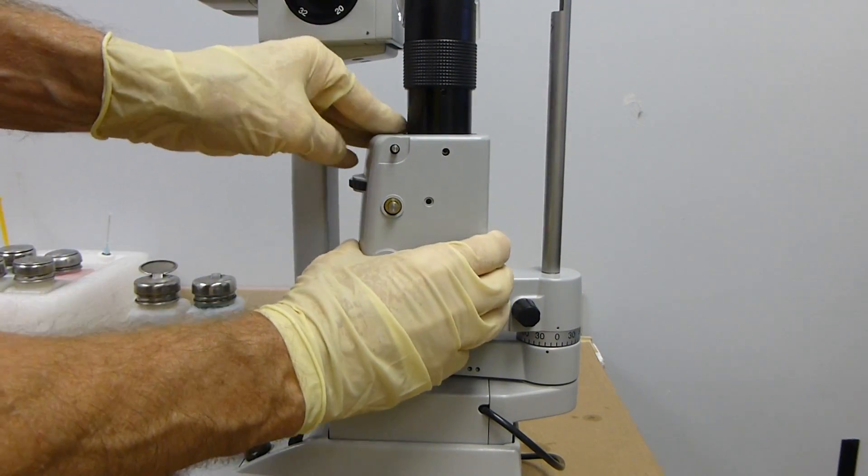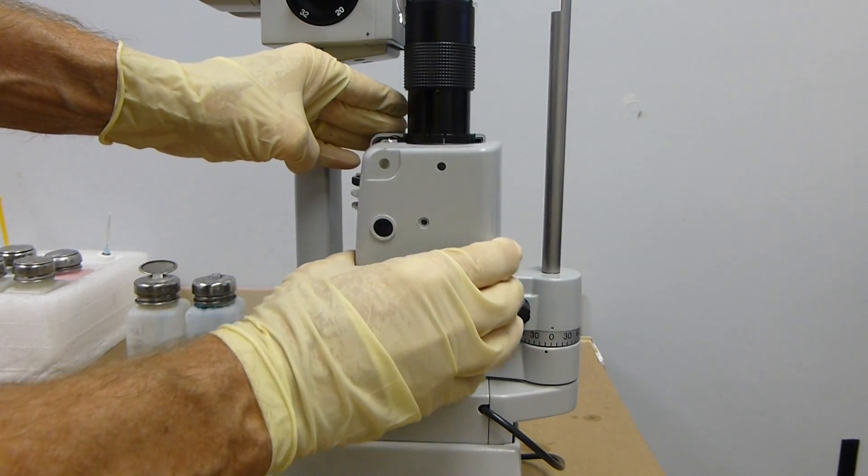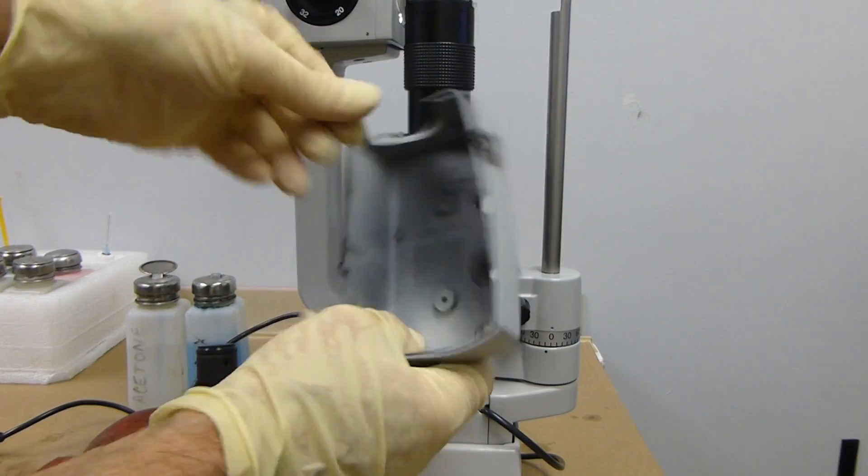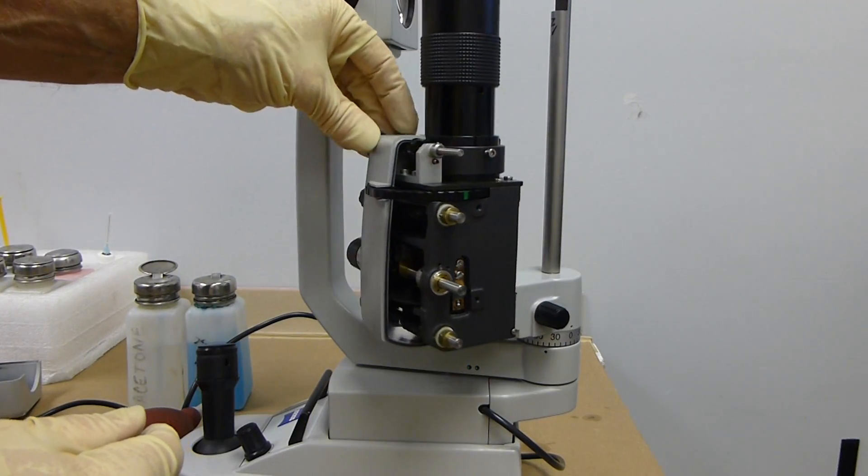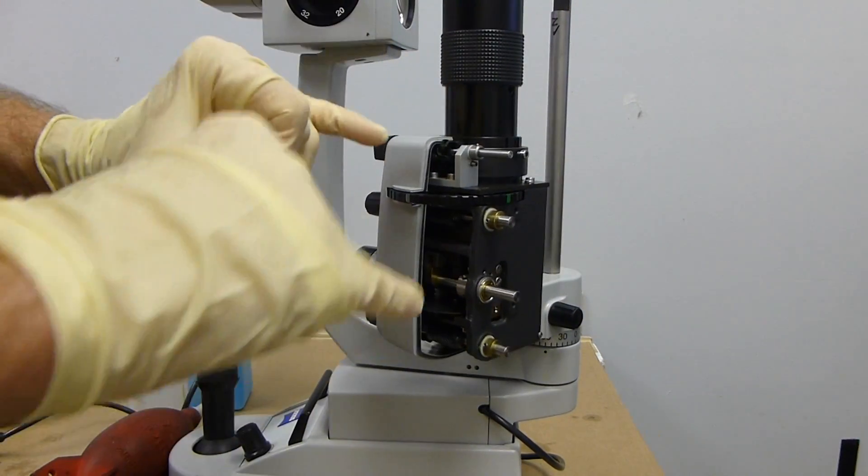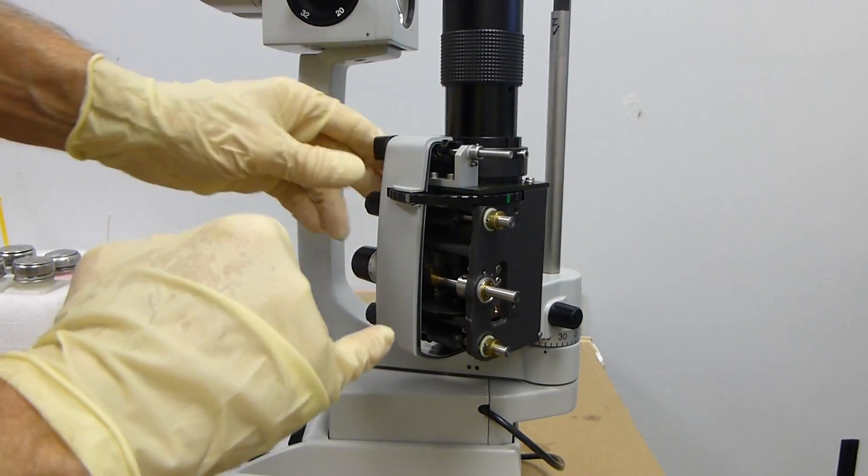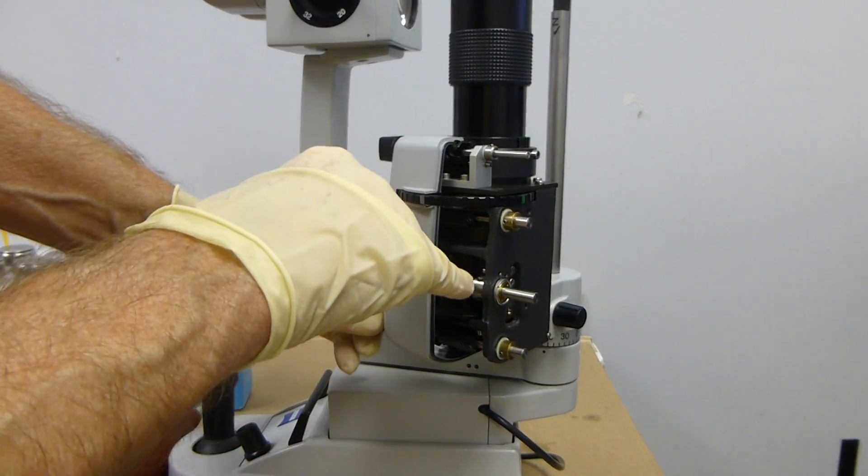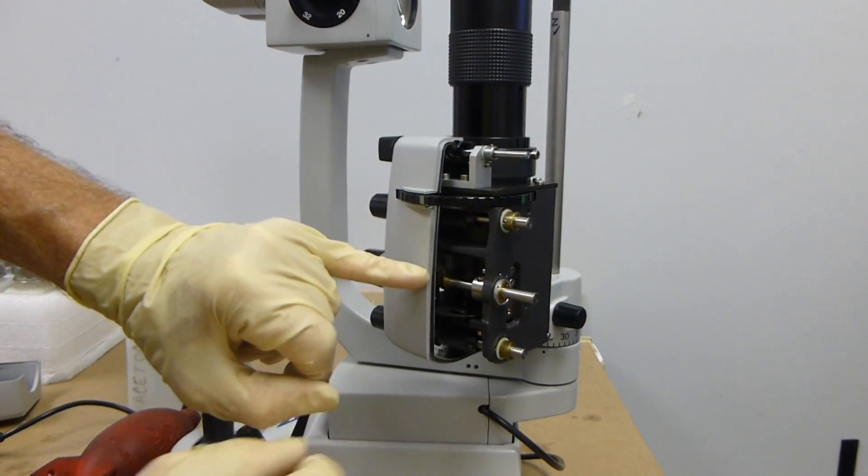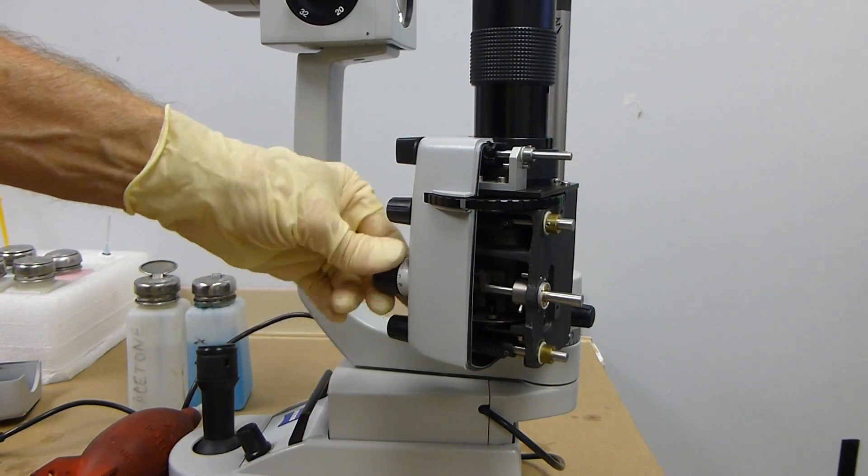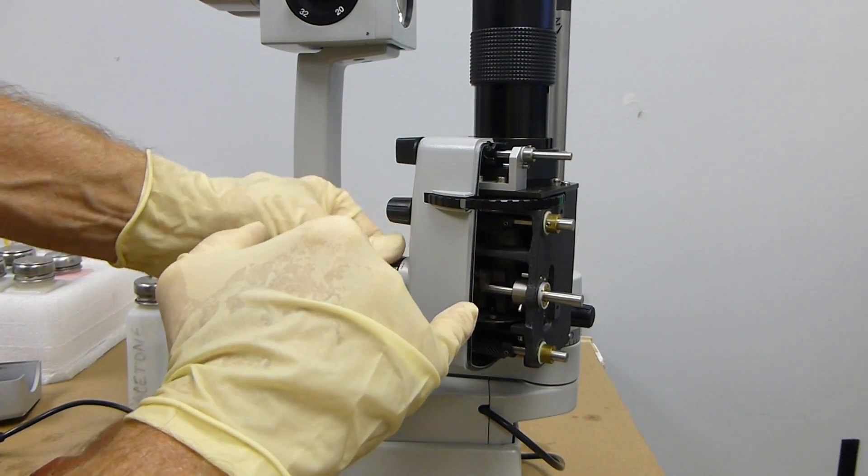Once you have your two Allens off, this side panel should come off. You have a little bit greater access to your filters. Here's your diaphragm right here, and then inside are your slits. When you turn your slit adjustment knob, you can see the slits in there.